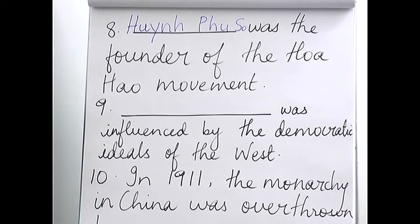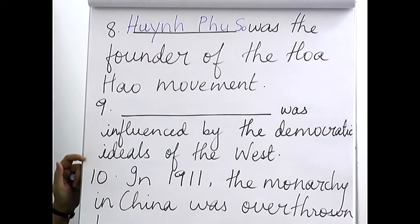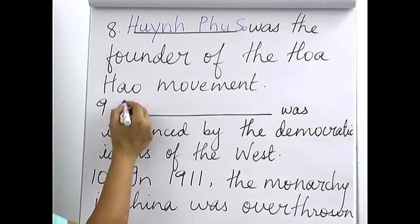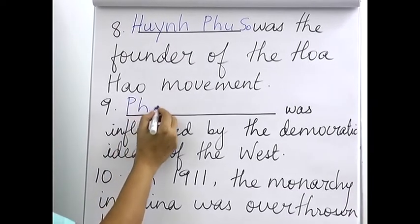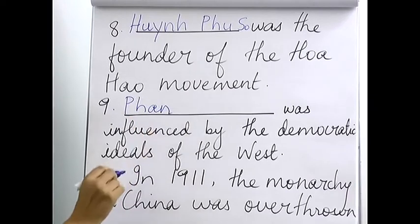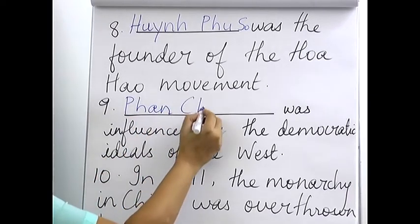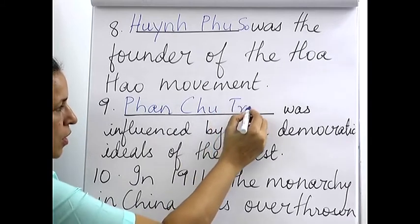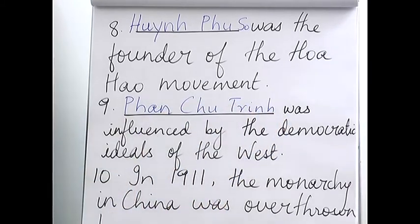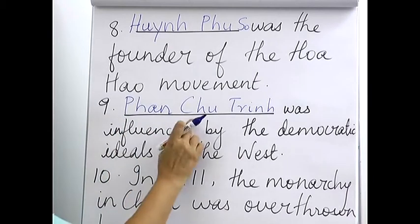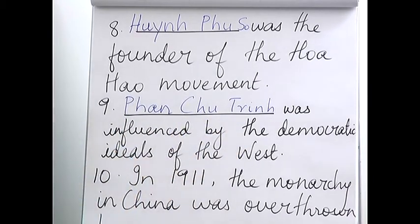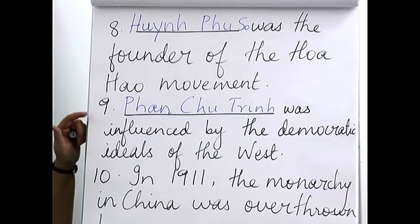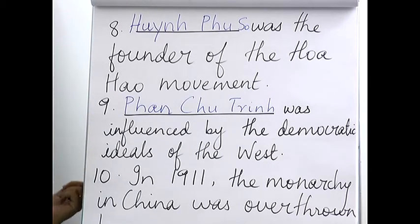Ninth: Phan Chu Trinh — T-R-I-N-H — was influenced by the democratic ideals of the West. Get the spelling right: Phan Chu Trinh was influenced by democratic ideals of the West. As a one-liner they can ask who was influenced.